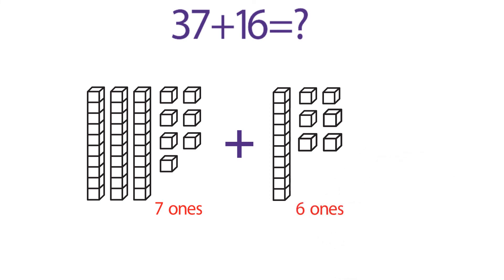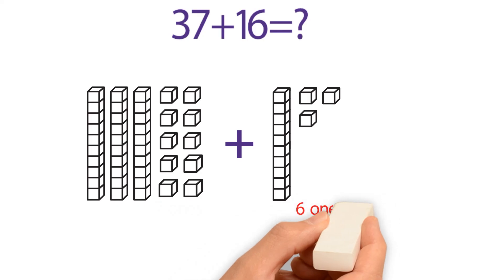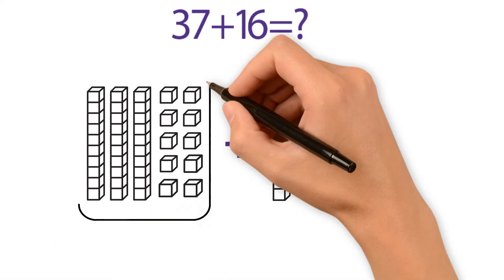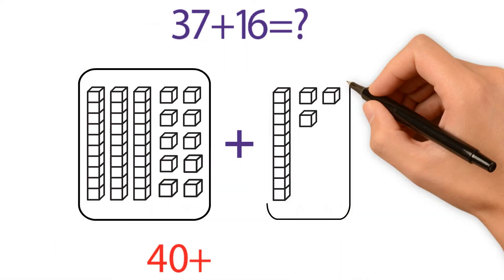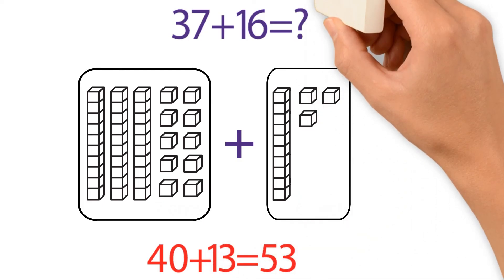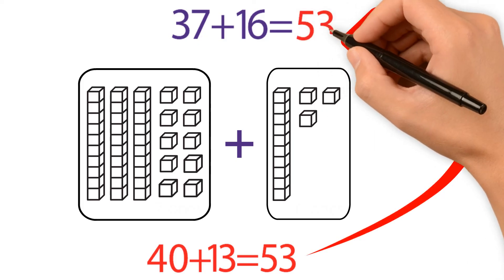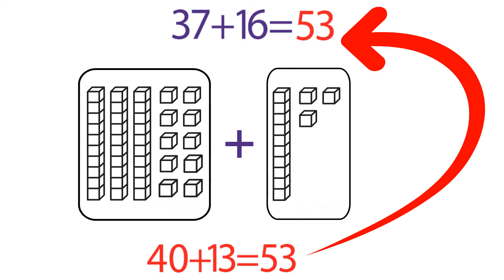So we transfer three ones to 37 to make it 40, which is a friendly number. This makes it easier to solve. 40 plus 13 equals 53, which means 37 plus 16 also equals 53.